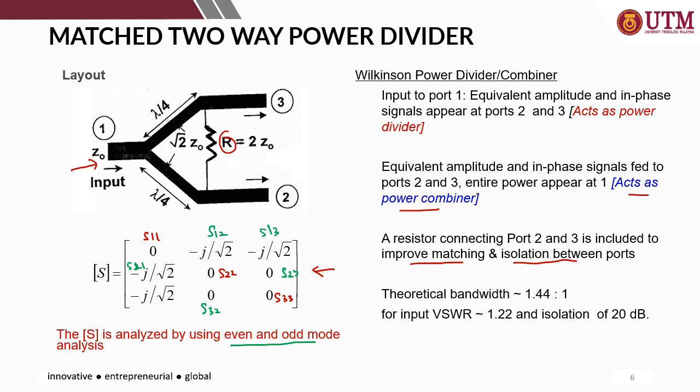The typical bandwidth for the Wilkinson power divider is 1.44 to 1, the SWR is 1.22, and the isolation is 20 dB.